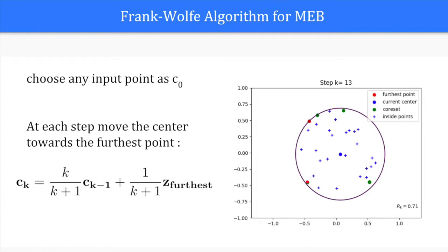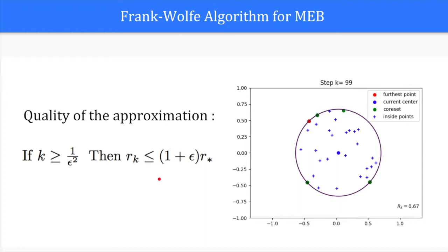This algorithm guarantees an epsilon approximation of the ball within 1 over epsilon squared iterations. It is worth noting that the quality of the approximation is independent of the space dimension d.